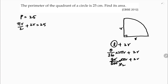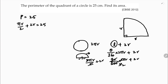Another way to remember the formula: the circle's perimeter is 2πr. For a semicircle, the arc length is half of 2πr, plus the diameter 2r, giving πr + 2r. For a quadrant, since it is one-fourth of a circle, the arc is one-fourth of 2πr, which is πr/2.